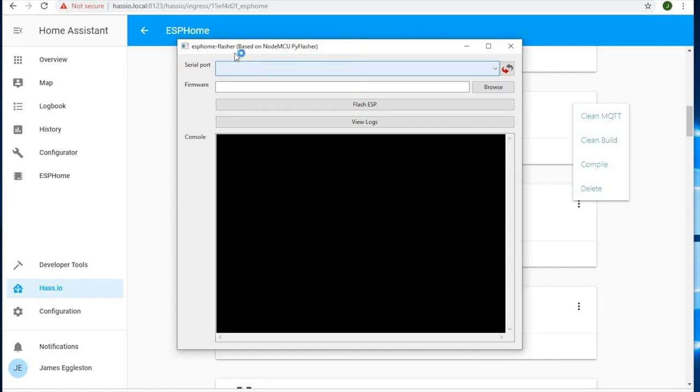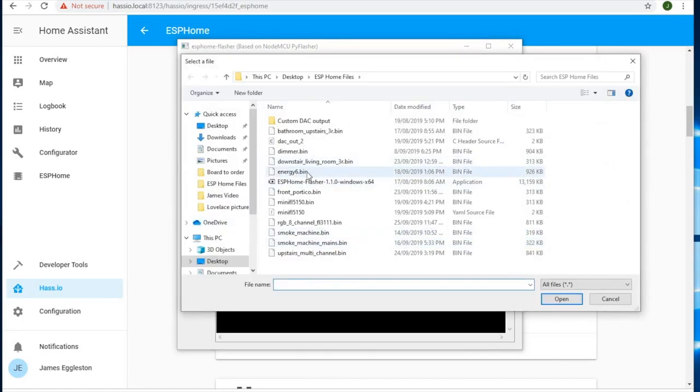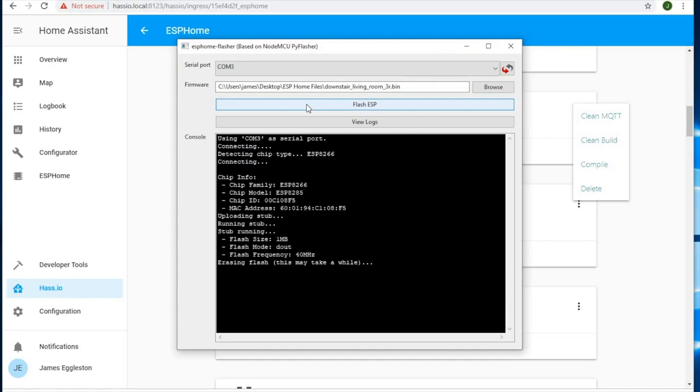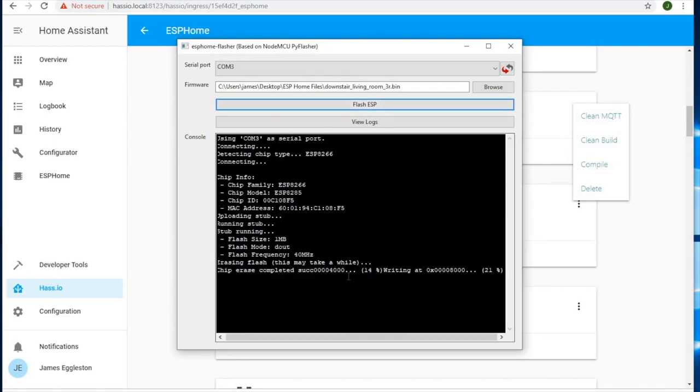Okay so we open up ESPHome flasher. And we've got our relay plugged in. And we had the button pressed whilst we were giving power to it. So it's in flash mode. We can then select the COM port. And we can select our firmware that we've downloaded. So this is the firmware file, the .bin file. And we can open that up. And then we can hit flash ESP. So that's ESPHome flasher. And it was available both on Windows and Mac.